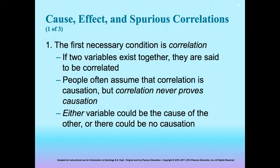In a spurious correlation, two events are inferred to be related, despite having no logical connection when examined more deeply.